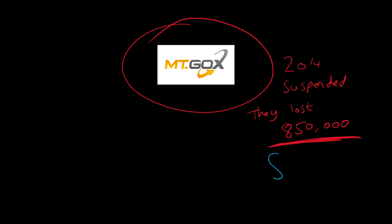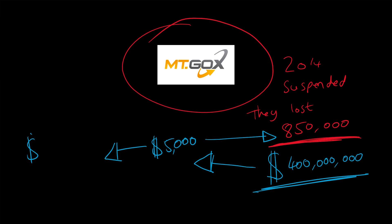If you look at today's market value, which is just shy of five thousand dollars, that same 850,000 bitcoins would be worth over four billion dollars. So four billion dollars worth of Bitcoin were lost from Mt. Gox, which is an exchange.